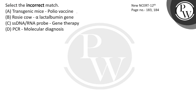Transgenic mice and polio vaccine — when we talk about vaccine safety, transgenic mice are being developed for use in the testing of the safety of vaccines before they are used on humans.